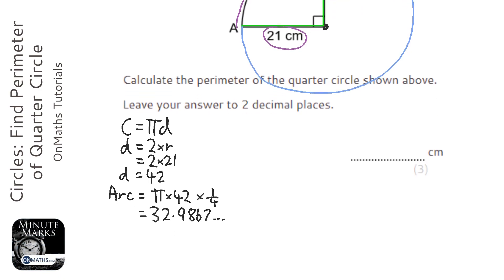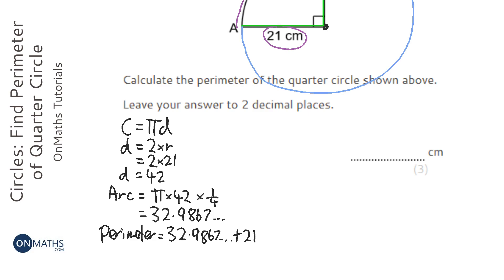So, I need to do, well it's perimeter, it's going to be that 32.9867, which I've got still on my calculator, plus 21, plus 21.